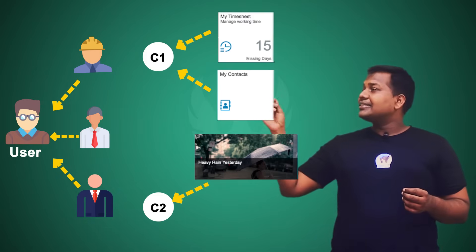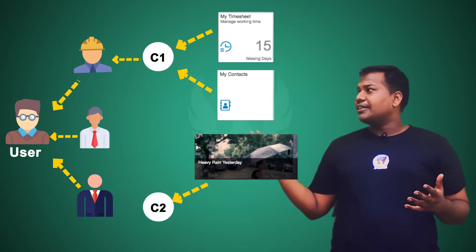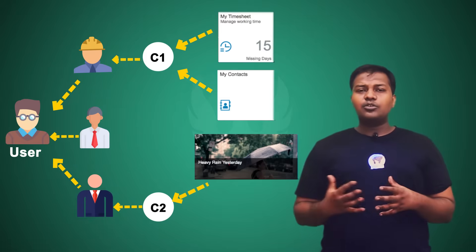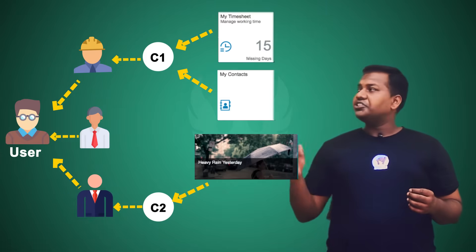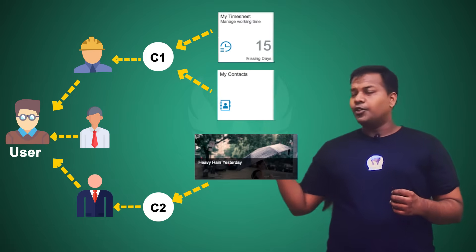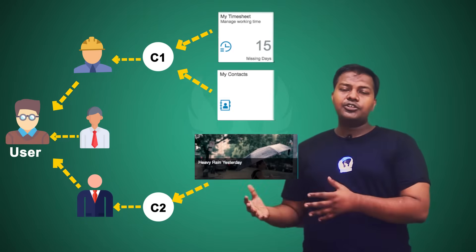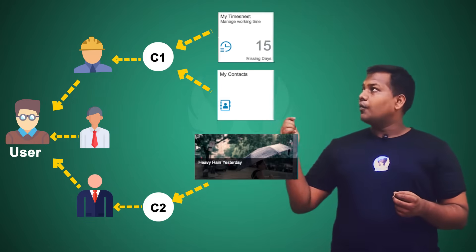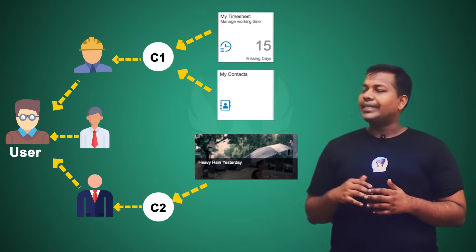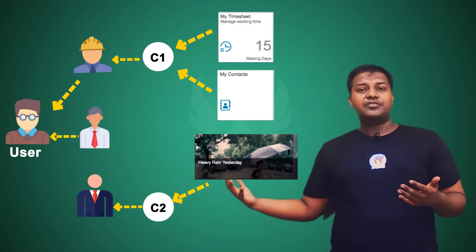We then assign catalogs to roles. For example, catalog C1 is given to the engineer role, so the engineer will have access to that catalog. Catalog C2 is given to the business user role — the person managing finance or strategy — so they get access to the newsfeed. A user can have multiple roles, such as employee and engineer, but may not be assigned the business manager role.